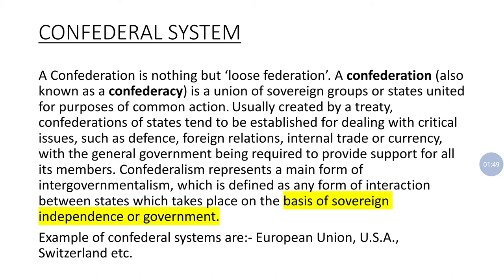This means that the central authority plays no role in the internal matters of the states. The center's power is very limited as compared to the states. This type of system is called the confederal system — a system in which states are very free to take their own decisions and have autonomy over their own region.